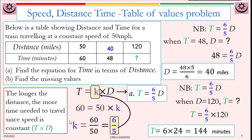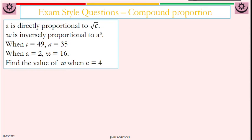This is something you need to understand. Distance, speed. In this particular example is directly related. Next example, typical exam style. This is what we call compound proportion. That's where you have more than two variables and they are interdependent. Let's look at this question. A is directly proportional to square root of C. And another variable W is inversely proportional to A cubed.